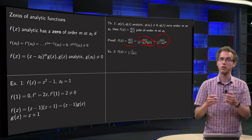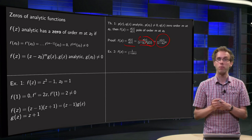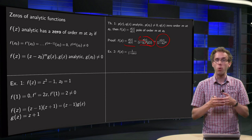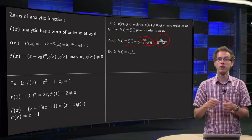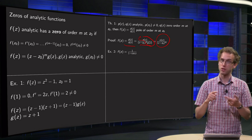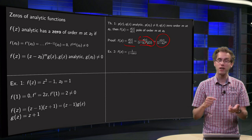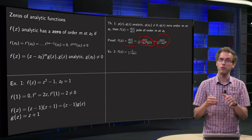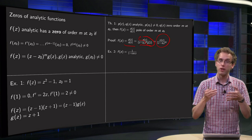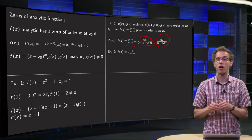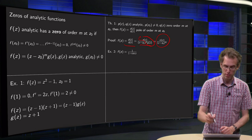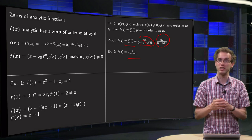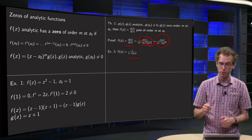For example, if you have alpha of z equals 1 over (1 minus cosine z), plugging in zero gives 1 minus 1 equals zero, so the denominator is zero. What is the order of the zero of (1 minus cosine z)? Plugging in zero gives zero; the derivative is minus sine z, which at zero is again zero; differentiating again gives minus cosine z, and plugging in zero gives minus 1, which is not zero. So the second derivative is not zero, meaning z equals zero is a zero of order 2. Since the numerator is just 1 (not zero), alpha of z has a pole of order 2 at z equals zero.